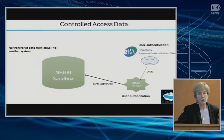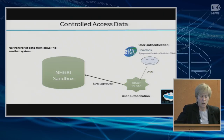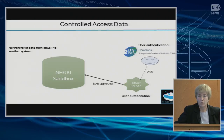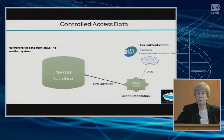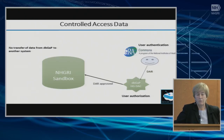If a user wants to have access to the NHGRI sandbox, the process works as follows: a user will be a registered user of the eRA Commons, will submit a data access request to dbGaP, and will use all the data authorization protocols already in place in dbGaP. If they're asking for NHGRI data, the NHGRI data access committee will review and approve the application. With an approved DAR, the user will be authorized to use the data on the NHGRI data sandbox — no changes to the current protocol, and no transfer of data from dbGaP to another system.